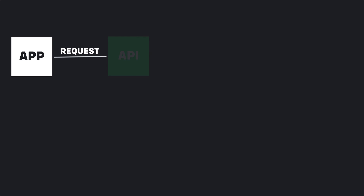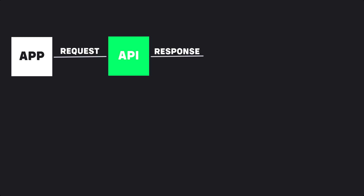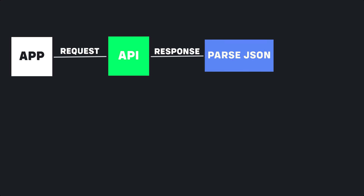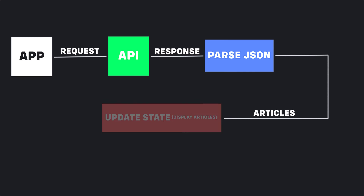There are three steps to display the news. The first step is to make a request to the API. In the second step we need to parse the response that the API returns to us, which is JSON. Then after parsing the JSON, we display the news list by updating the state with the help of the provider.